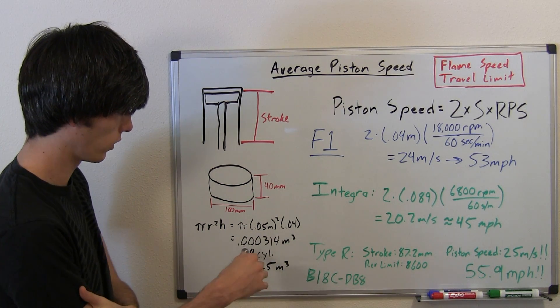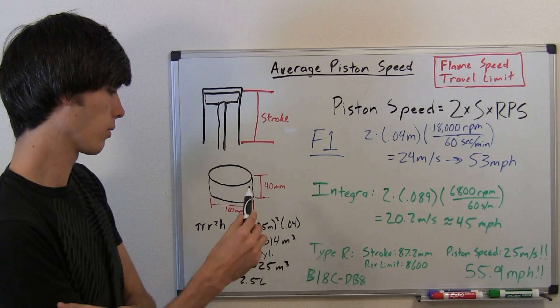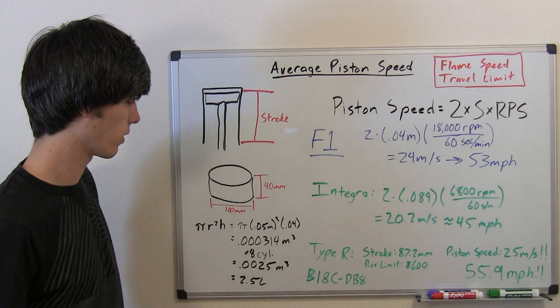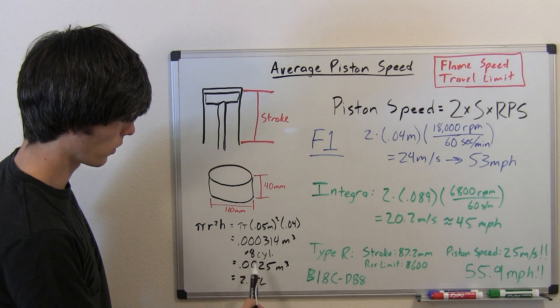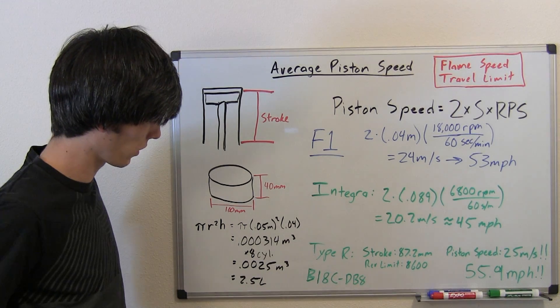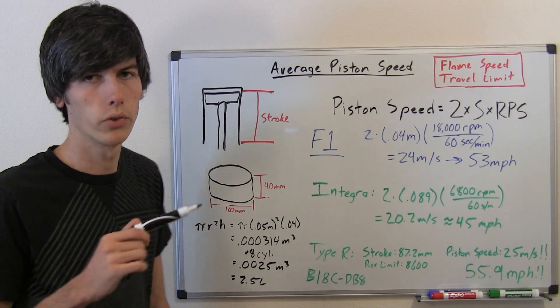That gives you 0.0003 meters cubed. You've got eight cylinders, so multiply that by eight to try and figure out the volume of the engine. You've got 0.0025 meters cubed. Convert that to liters, just move your decimal place over three. And you have 2.5 liters.